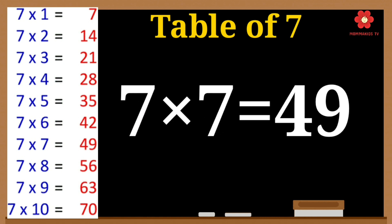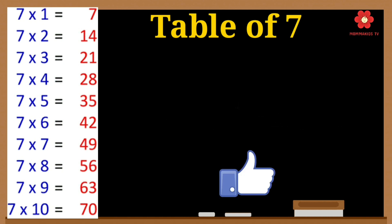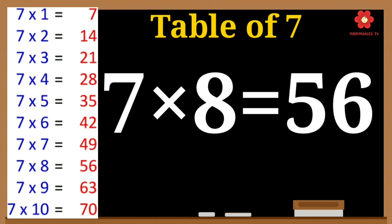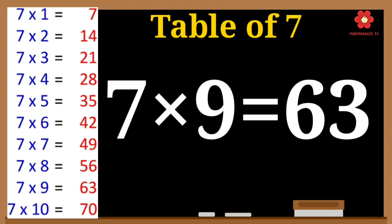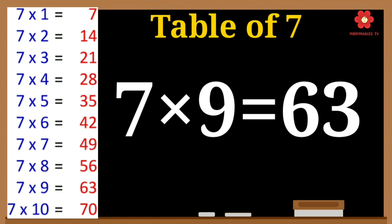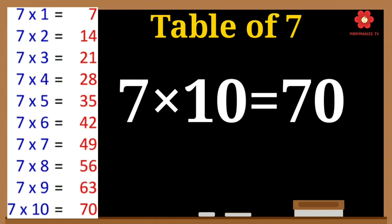7 7's are 49. 7 7's are 49. 7 8's are 56. 7 8's are 56. 7 9's are 63. 7 10's are 70.